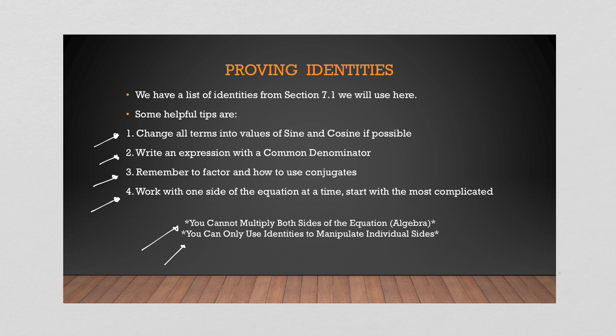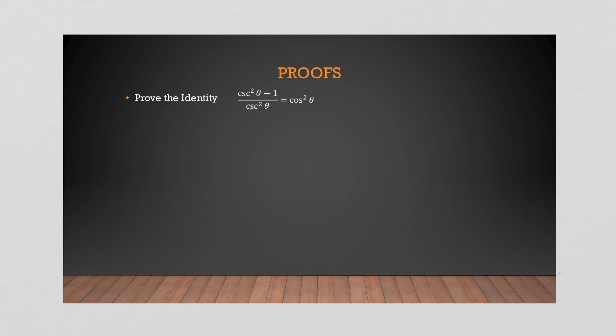Let's do a few of these so you can see them in action. Here we go: I'm going to prove this identity — I have (csc²θ - 1) / csc²θ = cos²θ. That is given. The idea is: can we make the two sides equal to one another? Can we prove that this is in fact true?